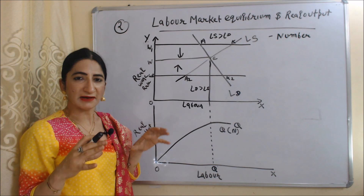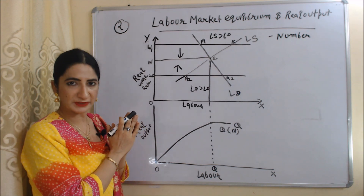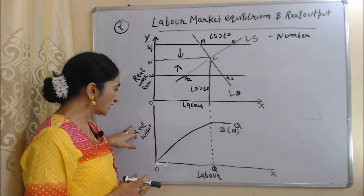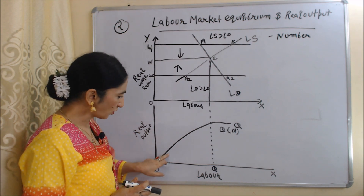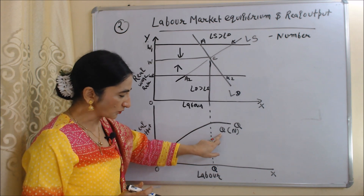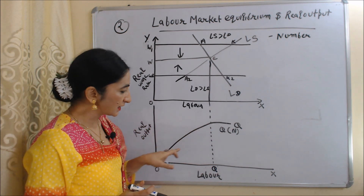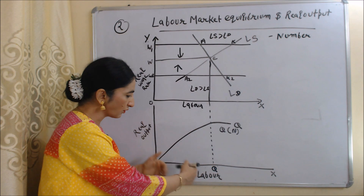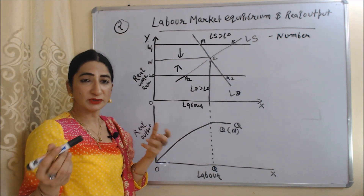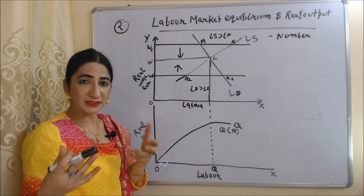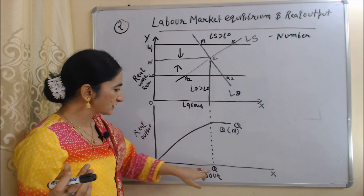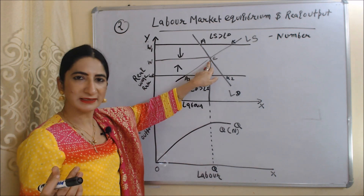Now we will see the level of real output at full employment. In this diagram, the x-axis shows labor and the y-axis shows real output. The OQ curve shows our real output, where Q is output and N is number of labor. As we employ more and more labor, output increases but at diminishing rates, because after a certain point the productivity of labor falls. OQ is the level of output at full employment.